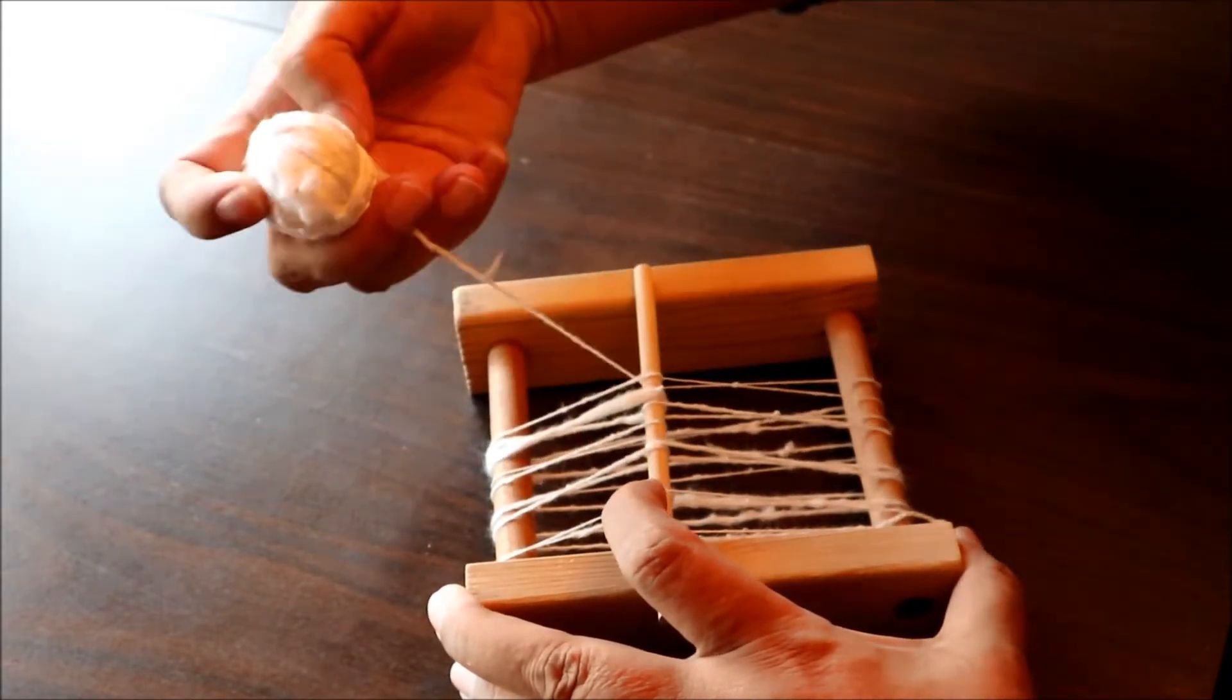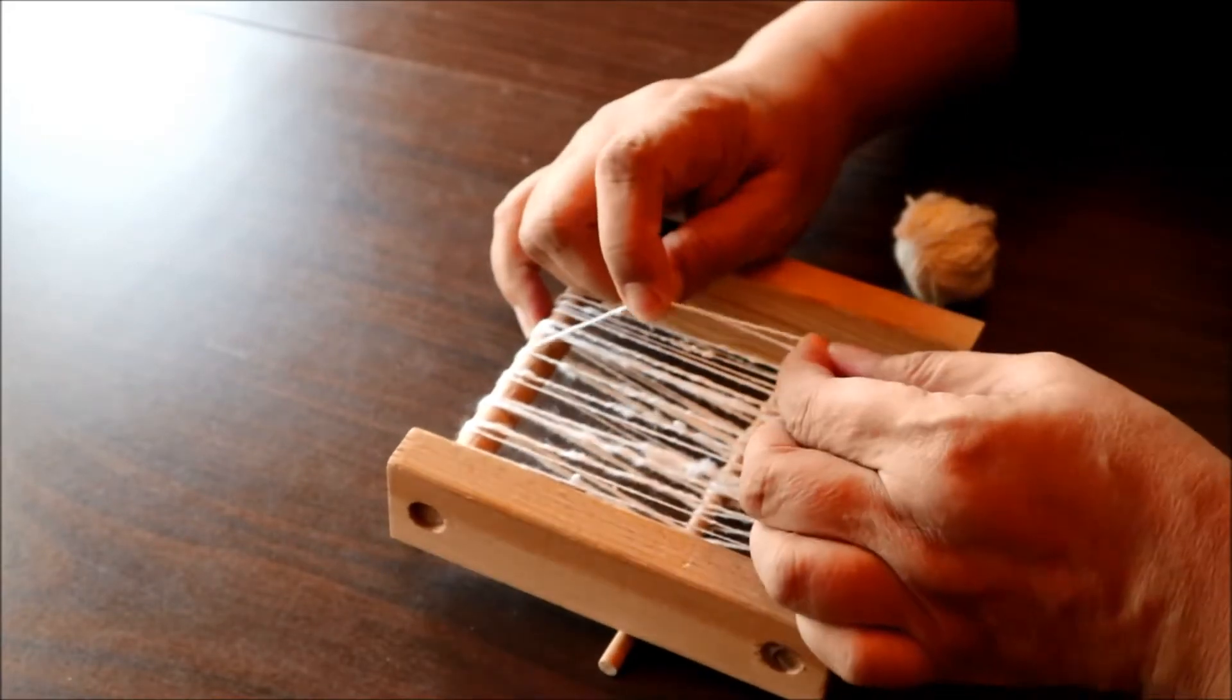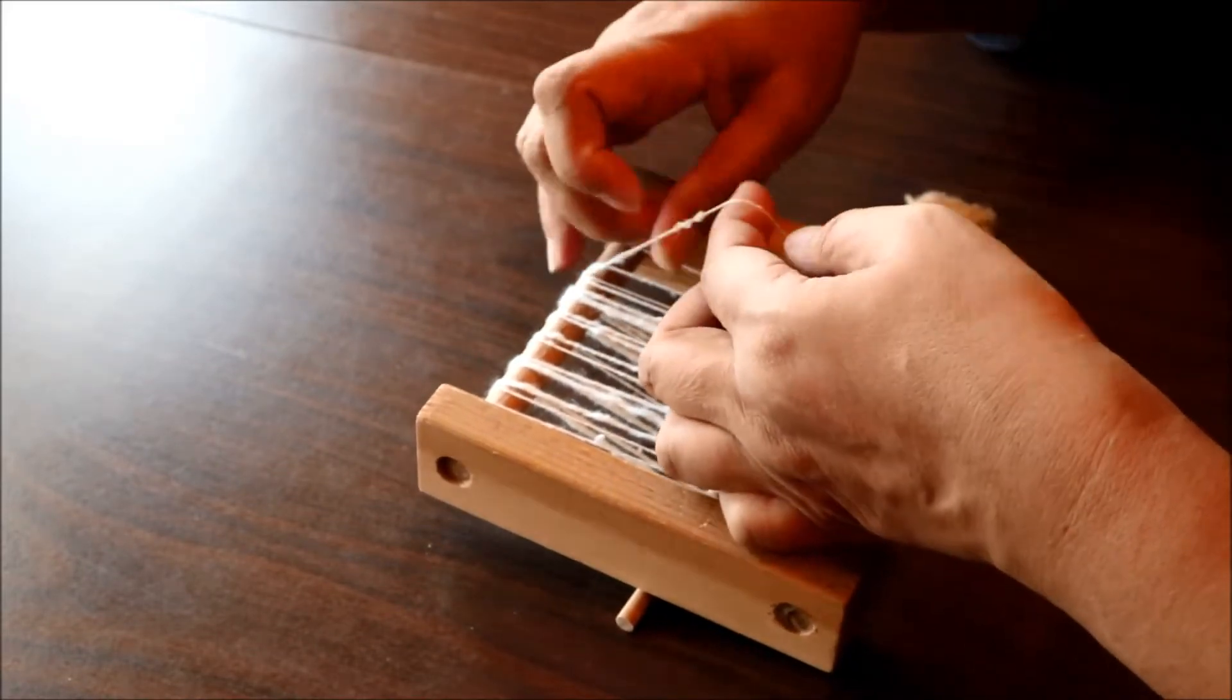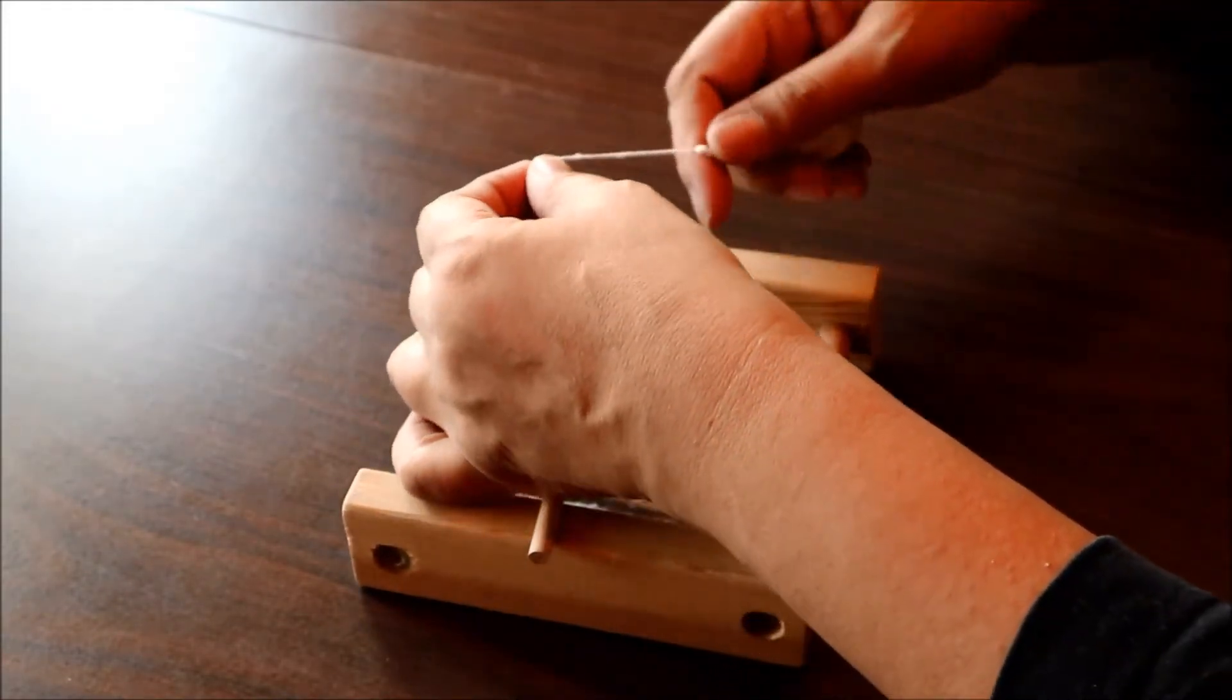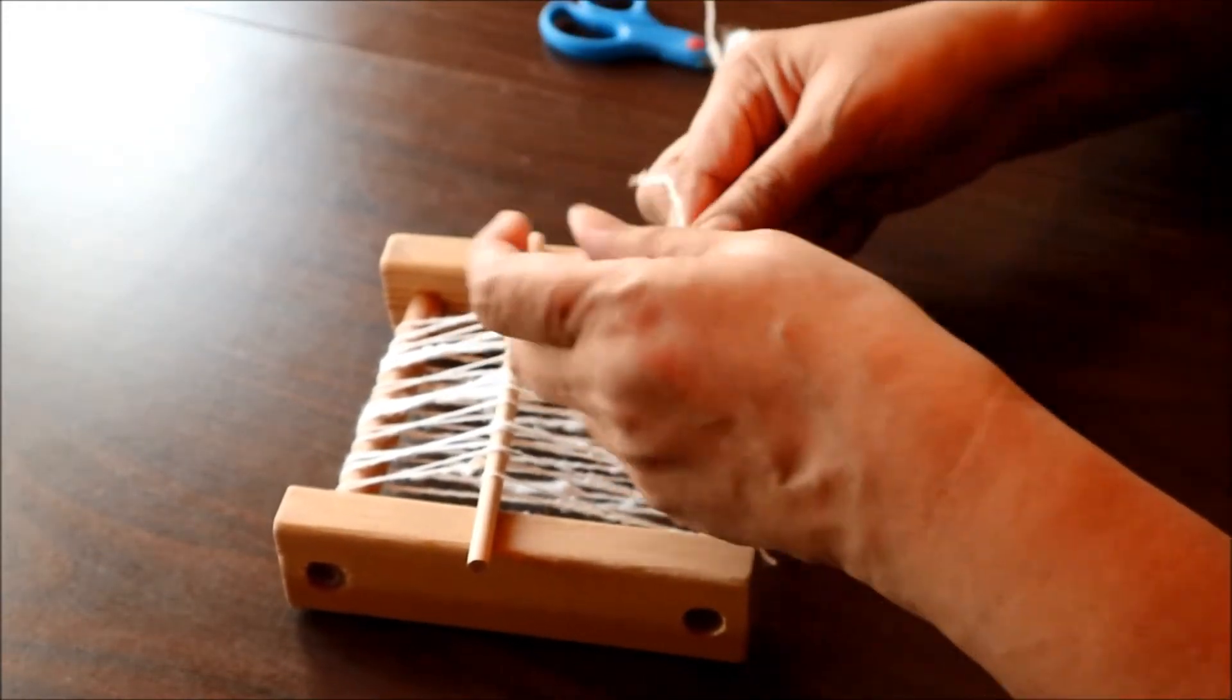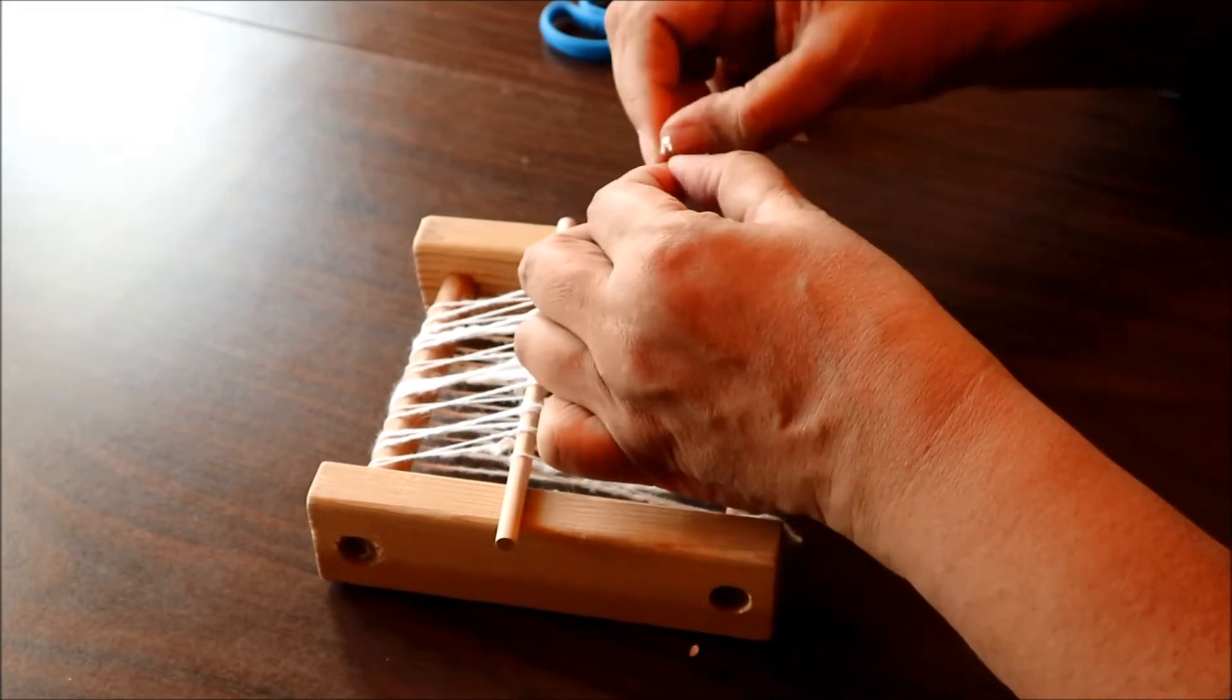And you do want to check that your warp threads have a nice even tension on them before you tie the end of your warp onto that bar at the back. You want to make sure that you've got a nice even tension on the threads. And then when you get to the end, you just cut off your warp thread and tie it onto the back of the loom with a little loop. And you're ready to start weaving.